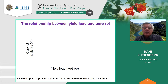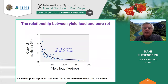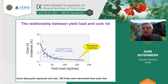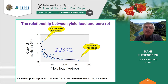We plotted the relationship between yield and core rot incidence for each tree and found a highly significant relationship: high yield is accompanied by low core rot incidence, and low yield by high core rot incidence. In a way, trees with high yield have a resistance response to this disease, and trees with low yield have a susceptible response. Obviously, this is not genetic resistance, because all trees are in the same orchard and the same cultivar — so this is physiological resistance.